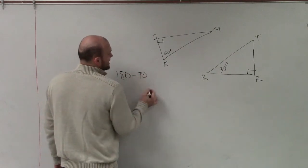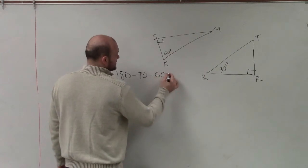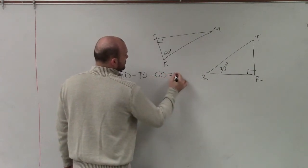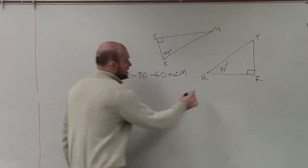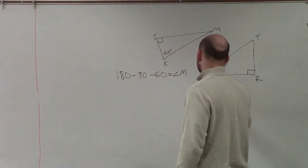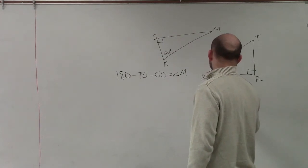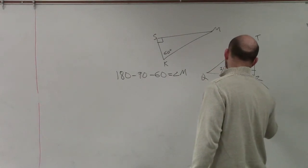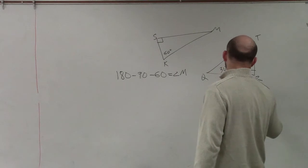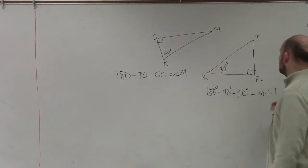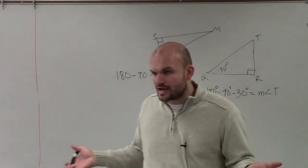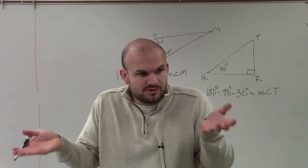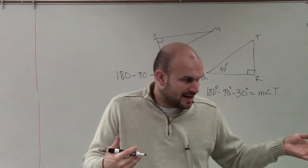Well, to do that, I have 180 minus 90 minus 60. And that will equal angle M. And then if I did it over here, I'd say 180 degrees minus 90 minus 30 degrees equals the measure of angle T. Would you guys agree with that? Because all the angles in a triangle add up to 180. So if I take the two angles I know, subtract them from 180, that's going to give me my missing angle.